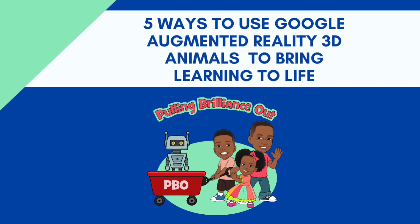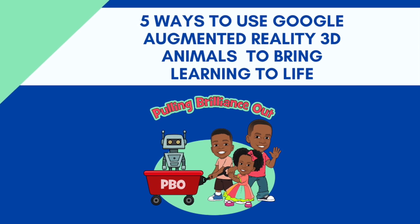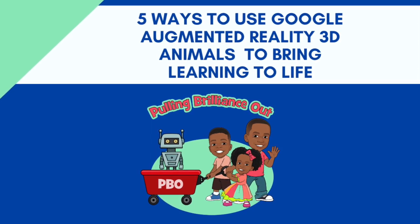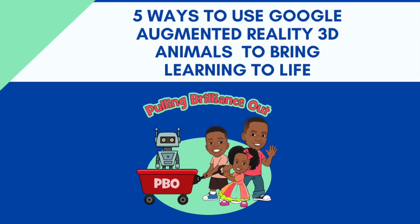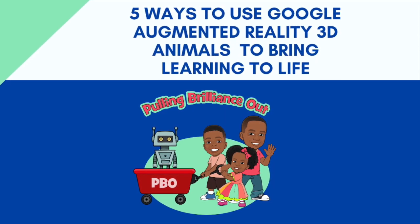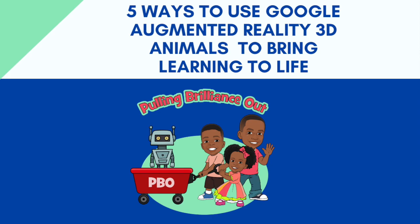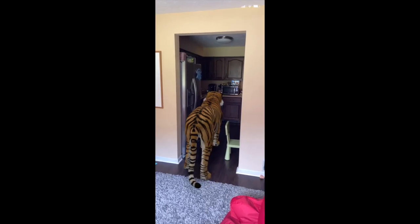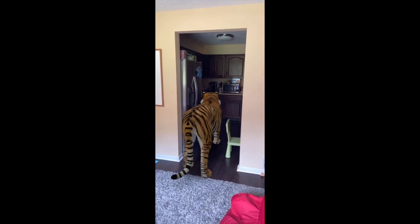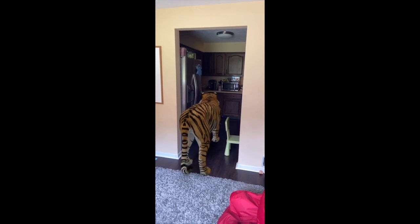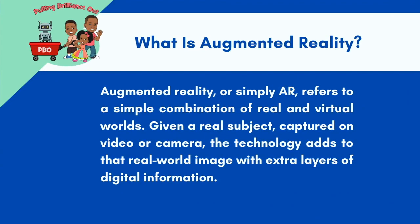Hello everyone and welcome back to our channel. Today on Pulling Brilliance Out in STEM, we are going to look at five ways to use Google Augmented Reality 3D animals to bring learning to life. We are doing remote learning with our little ones stuck in the house, so let's look at how we can bring this exciting tiger into your kitchen too.